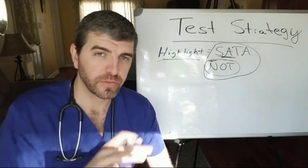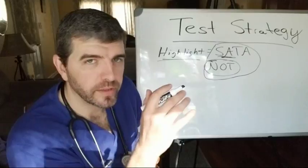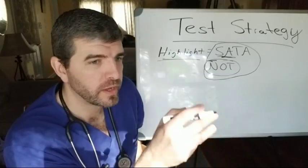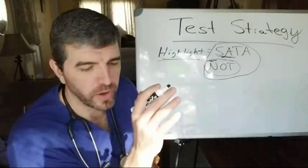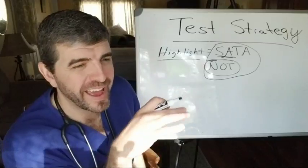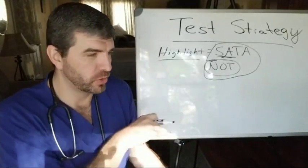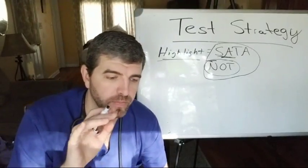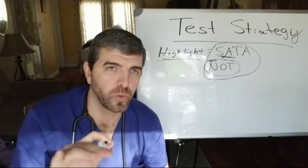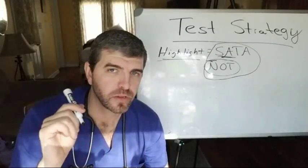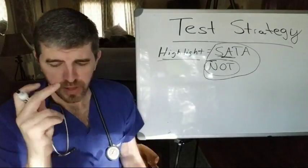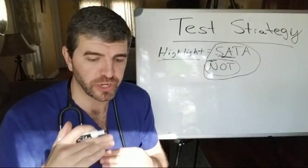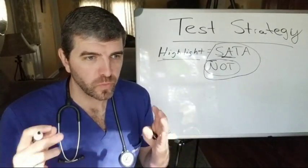After you've done that, immediately eliminate the wrong answers — the answers you know are absolutely wrong. If you have four choices, you'll know automatically that two of them are going to be kind of weird, and there will be two that are absolutely wrong no matter what. Eliminate those and you've narrowed it down to two answers.